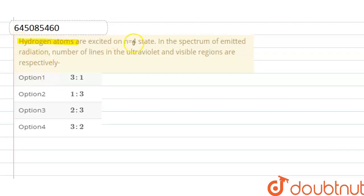atoms are excited to n equals 4 state. In the spectrum of emitted radiation, the number of lines in the ultraviolet and visible regions are respectively—so here we have to find out the number of spectral lines that fall in